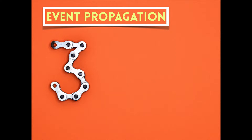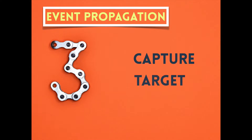The word propagation basically means widely spreading. How this applies to DOM elements is that when an event is fired on a child element, that event actually propagates or spreads throughout the entire DOM hierarchy. It does this in three different phases: the first one is the capture phase, the second one is the target phase, and the third one is the bubble phase.